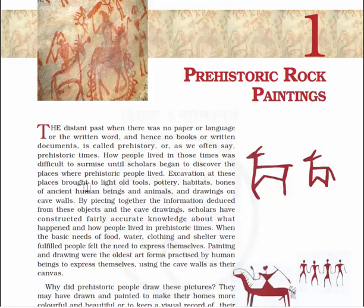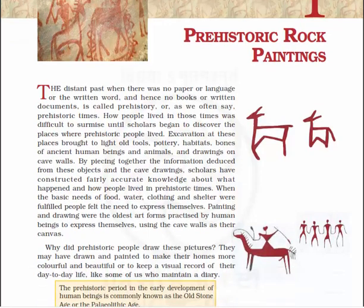Excavation at these places brought to light old tools, pottery, habitats, bones of ancient human beings and animals, and drawings on the cave wall. By piecing together information deduced from these objects and the cave drawings, scholars have constructed fairly accurate knowledge about how people lived in prehistoric times.